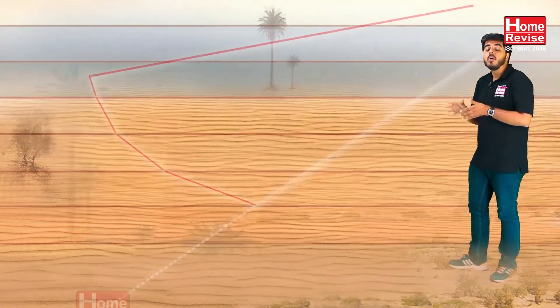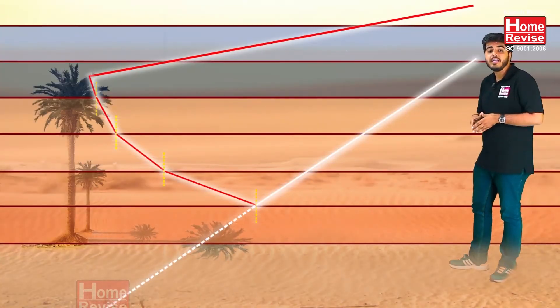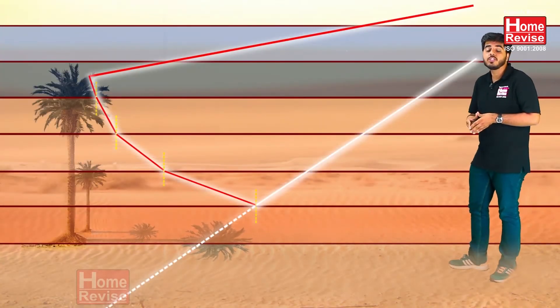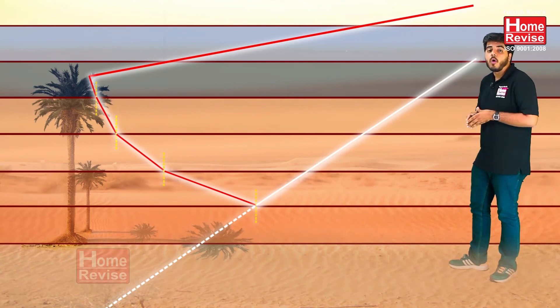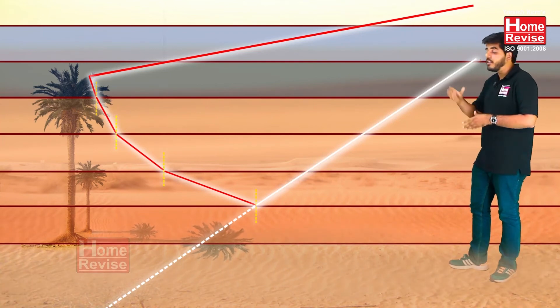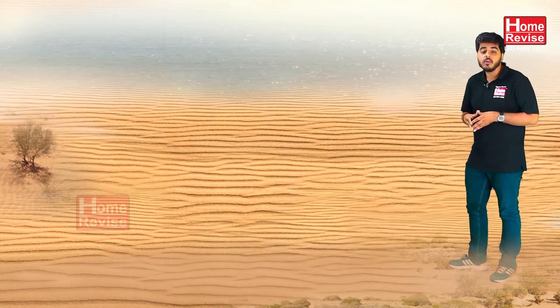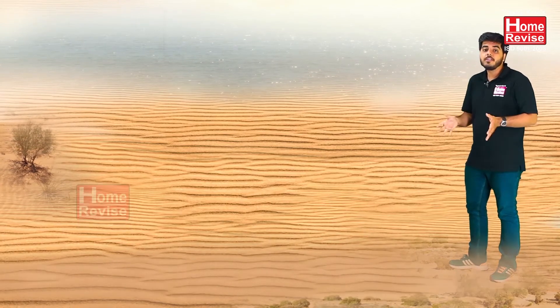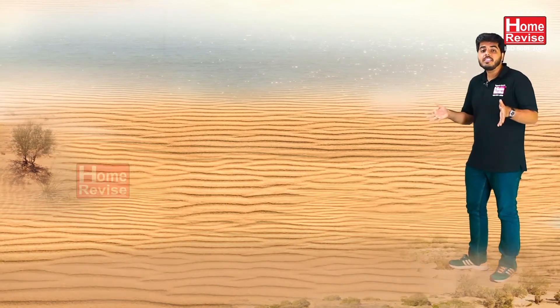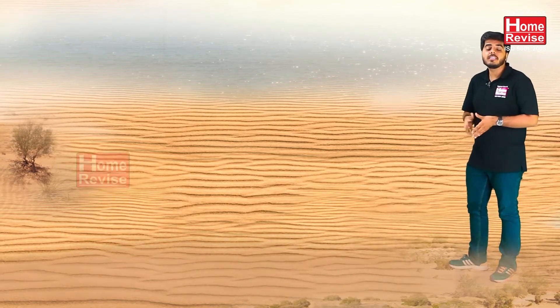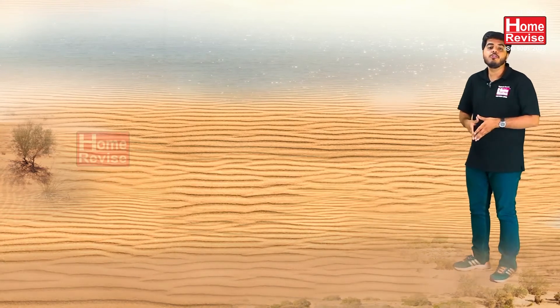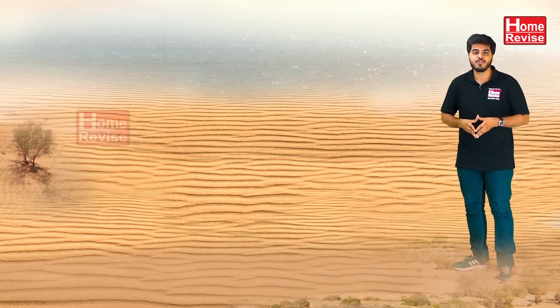Mirage happens due to this total internal reflection. What we see is the reflection of clouds, and that appears as water. That is the reason during hot summer days we see water bodies that are nothing but an optical illusion called a mirage.